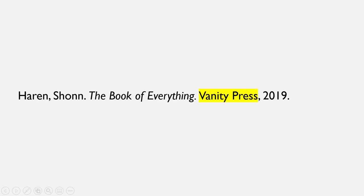The next element in the citation is the publisher's name. This should be formatted exactly as it appears in the book, followed by a comma. We include the publisher to help make it clear which edition of the book you got your information from, as pagination may be different in different editions. Finally, we include the date of publication at the end of the citation, followed by a period. The date of publication is included for similar reasons as the publisher — to help determine the edition of the book. It may also be helpful if a book has multiple editions, because sometimes information changes drastically from one edition to the next.